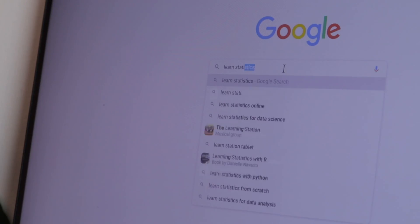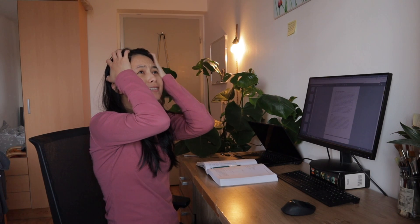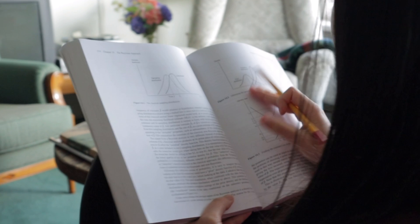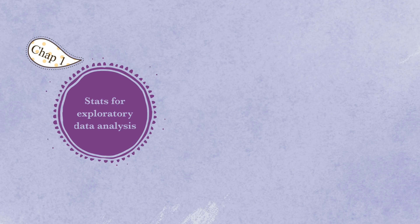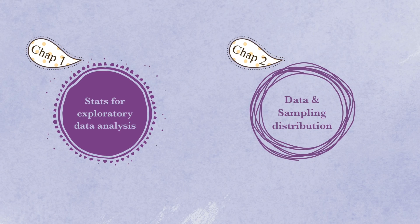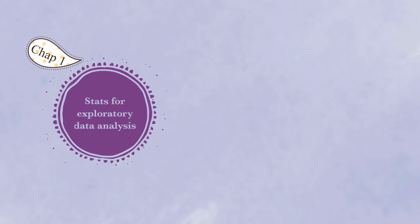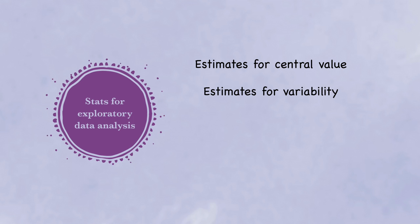If you want to learn statistics for data science, where do you even start? We're all suffering from information overload. If we pick up any statistics book, we might come across a lot of traditional statistical concepts that may no longer be relevant in modern data science. That's why I put together a short list of the basic statistical concepts most useful from a data science perspective. In this video, we'll cover statistics for exploratory data analysis, including estimates of central values, variability, data distribution, and correlation.